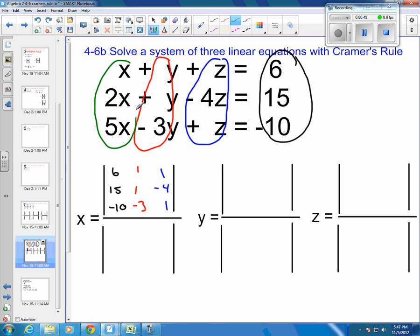Okay, and here are my x's. The denominator is always the same. We put our x's: 1, 2, 5. Then, we put our y's: 1, 1, negative 3. And then, we put our z's: 1, negative 4, and 1. Then, we can solve our matrix.